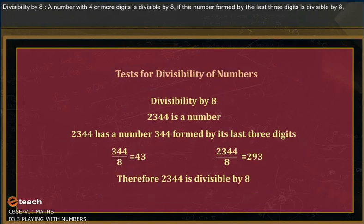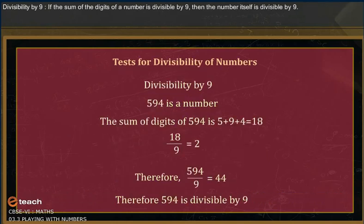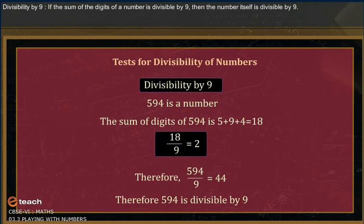Divisibility by eight: a number with four or more digits is divisible by eight if the number formed by the last three digits is divisible by eight. Divisibility by nine: if the sum of the digits of a number is divisible by nine, then the number itself is divisible by nine.